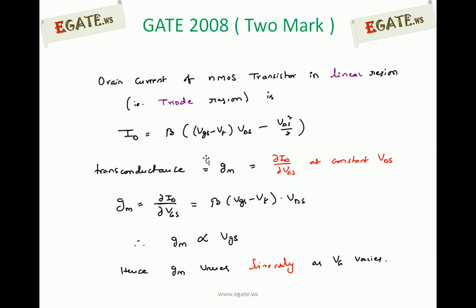Now from the given equation, ID = β(Vgs - Vt)Vds - Vds²/2, from this calculate transconductance. Transconductance is ∂ID/∂Vgs at constant Vds.